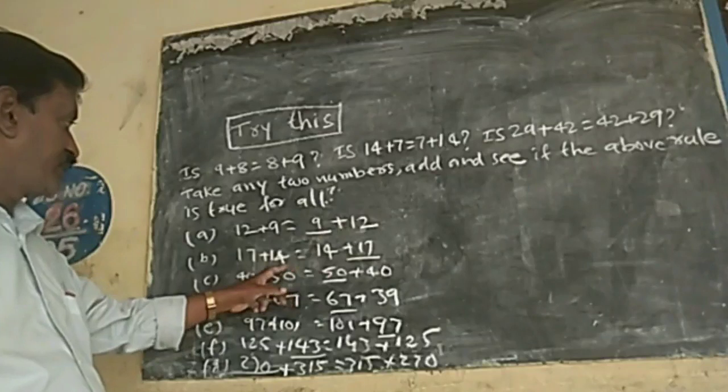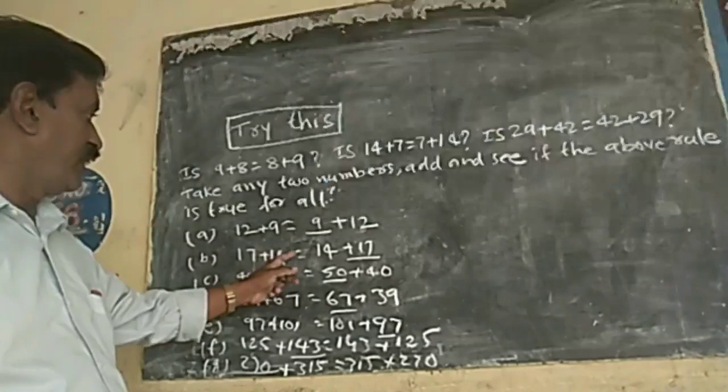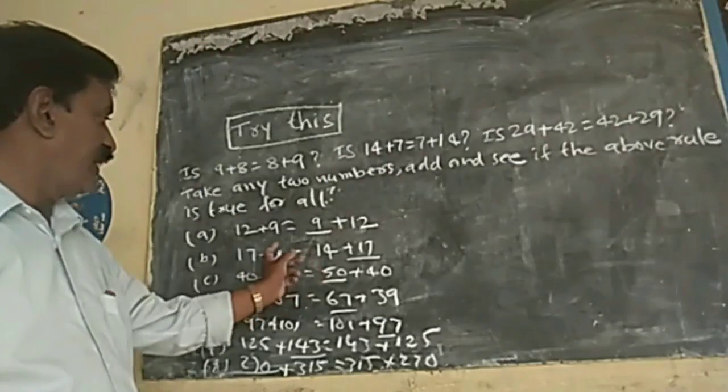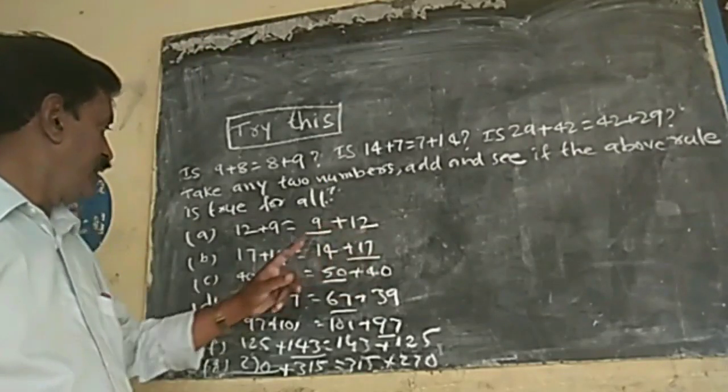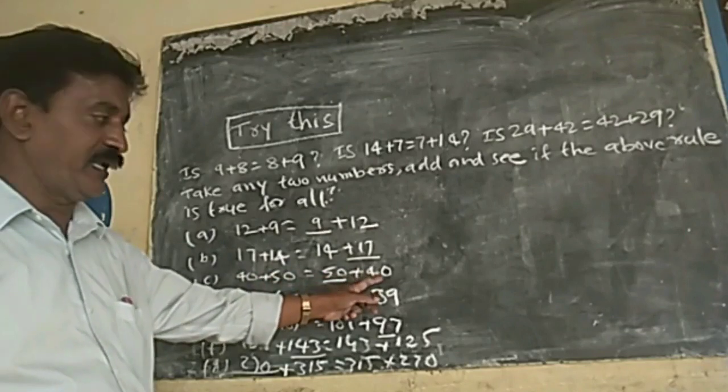Right, reverse is also in addition correctly. So, B: 17 plus 14 is equal to 14 plus 17, right here. Next, 40 plus 15 is equal to 50 plus 40, right 50.